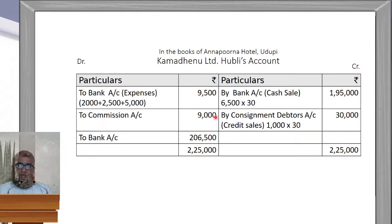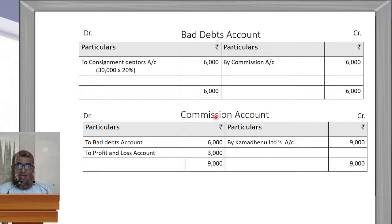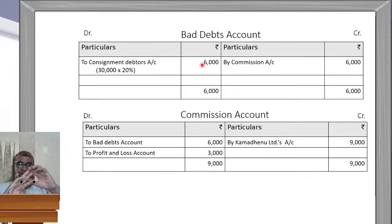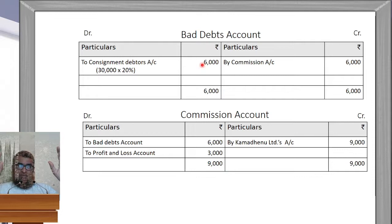Now for the Bad Debts Account: the credit sale was Rs. 30,000, but the customer paid only 80%, so 20% = Rs. 6,000 is bad debt. All accounts are transferred to Consignment Debtors Account. This bad debt is the responsibility of the consignee because of the del credere commission. So bad debt of Rs. 6,000 is adjusted against commission: 'By Commission Account Rs. 6,000.'